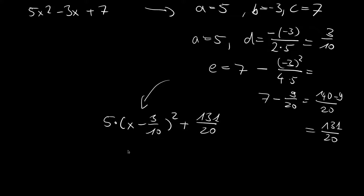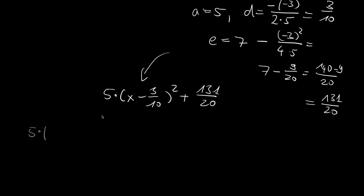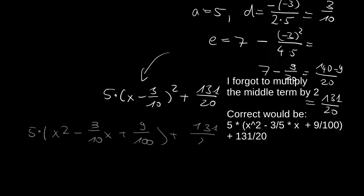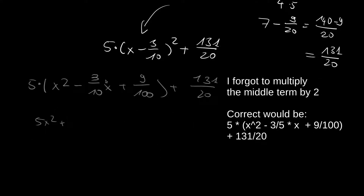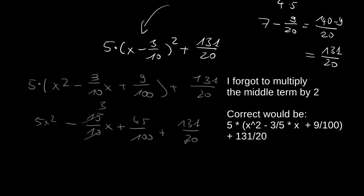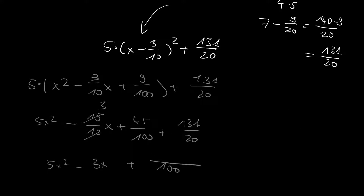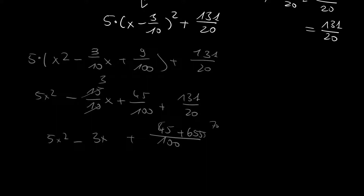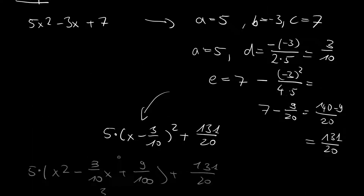We can check this by expanding the square: we get x squared minus 3 over 10 times x plus 9 over 100, closing bracket, plus 131 over 20. Multiplying by 5 gives 5x squared minus 15 over 10 times x plus 45 over 100 plus 131 over 20. Simplifying, with a common denominator of 100, we get 45 plus 655 equals 700, and 700 over 100 equals 7. We recover our original form.